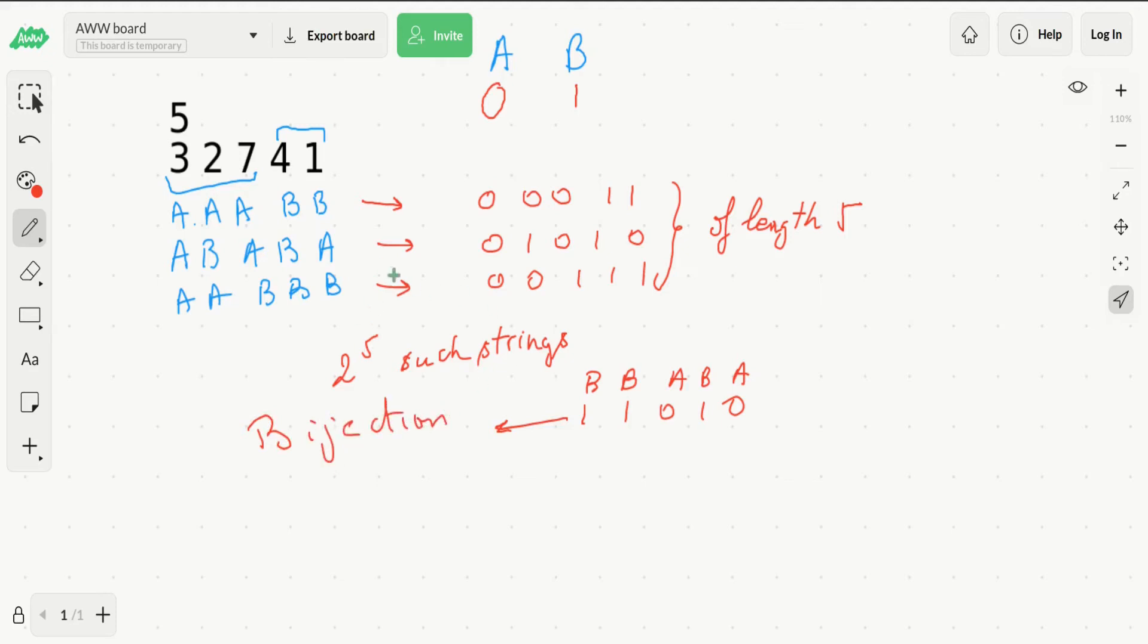This means that in order to explore all possible assignments or to brute force all possible ways, we just have to go through all possible binary strings from 0 to 2 to the n minus 1.